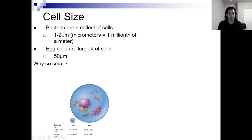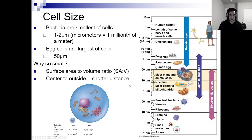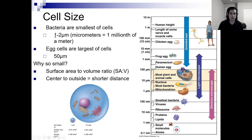Cell size. So bacteria are the smallest of cells. We've got things like atoms, then we go up to our macromolecules, then we go to our organelles, and then we have some of our smallest bacteria around 100 nanometers, one to two micrometers. And then we have our egg cells, which are the largest of cells. If we were to look at where is the chicken egg — about 10 centimeters.